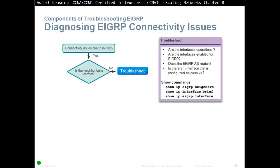Some commands we can use for neighbor troubleshooting: Show IP EIGRP Neighbors — do we have our neighbors? Show IP Interface Brief — check the interfaces are up and have an IP address. Or Show IP EIGRP Interfaces — to verify that interfaces have actually been enabled for EIGRP.